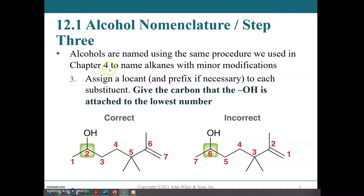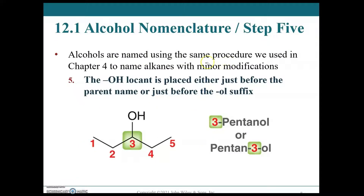Following the rules established in Chapter 4, we assign the location and prefix to each substituent, and the hydroxyl is attached to the lowest-numbered carbon. So here, our parent chain is seven carbons. Depending on which end we count from, we can place the hydroxyl at position two — which would be the lowest, so that's correct. Placing it at position six would be incorrect. When we name an alcohol, the OH locant at position three can be placed either just before the parent name, as in '3-pentanol', or as 'pentan-3-ol' — either is acceptable.